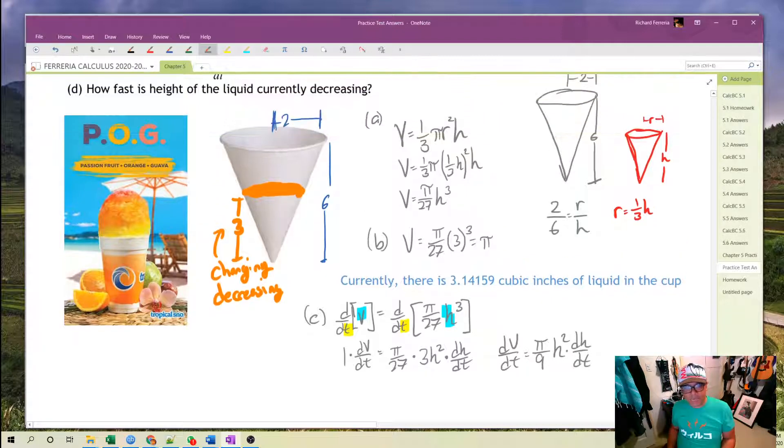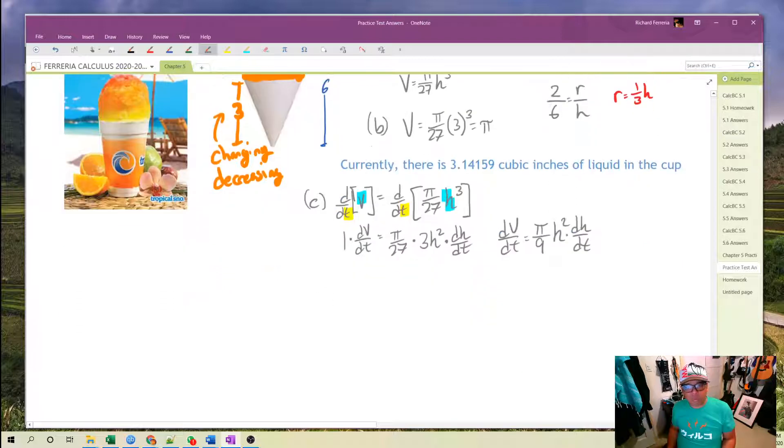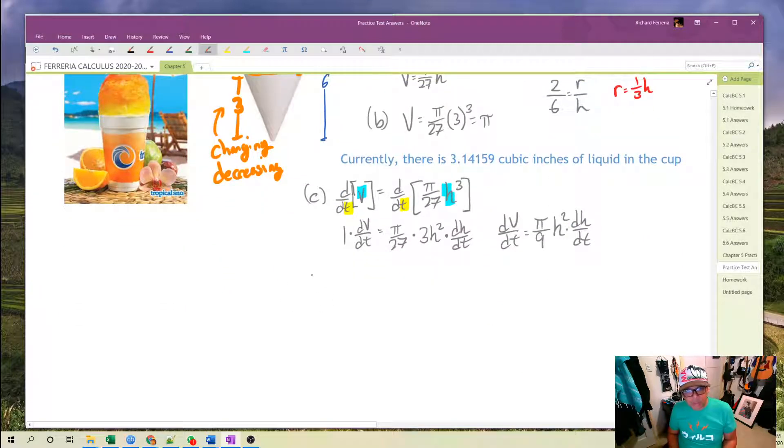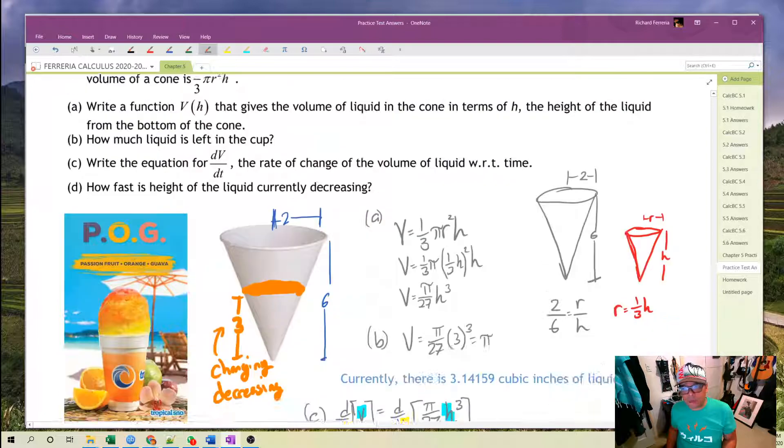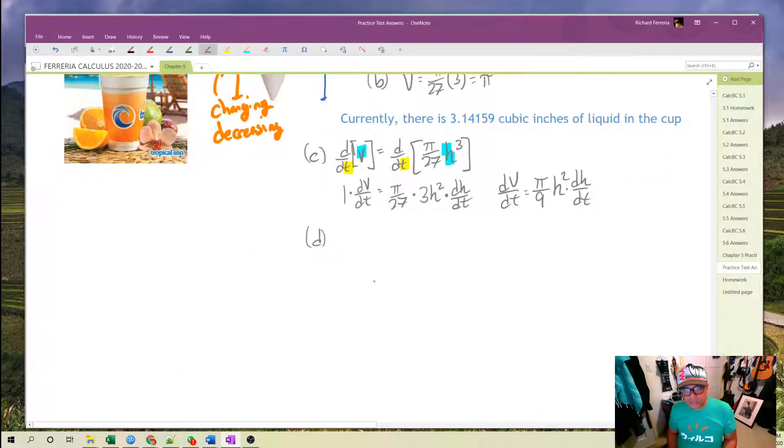How fast is the liquid currently decreasing? So for part d, we're just going to substitute our current state into dV/dt. So do I have a number for dV/dt? Yeah, the cone is draining at a half cubic inch per minute. So since dV/dt is decreasing, we're going to do negative 0.5 for dV/dt. It's just a good habit to get into. Pi over 9, currently h is 3 and then dh/dt.